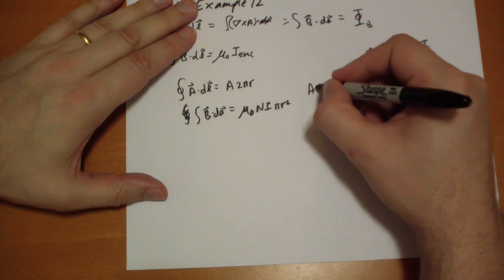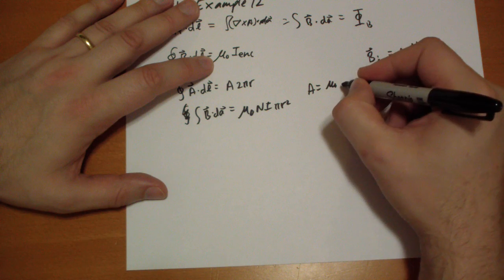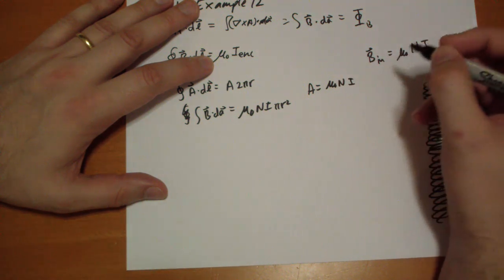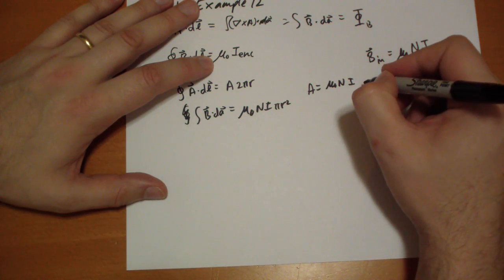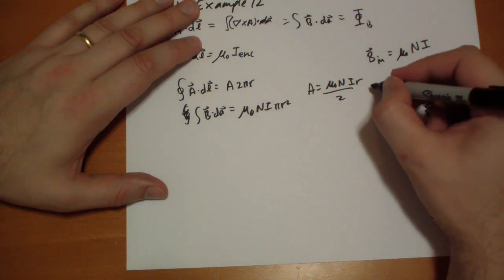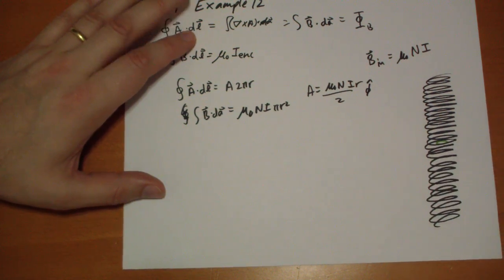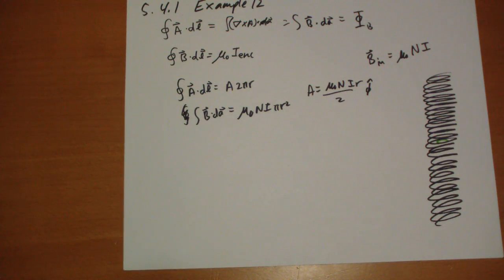Okay, so bringing those two together, we get A is equal to mu naught on top, here's an n on top, an i on top, and an extra r, and we got it divided by 2. And which direction? That's in the phi hat direction. It's a cylindrical coordinate. So it's pointing around in that direction.